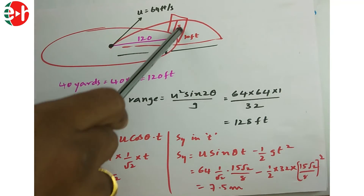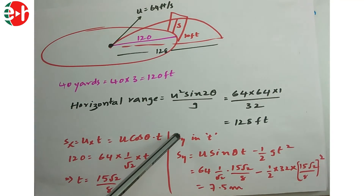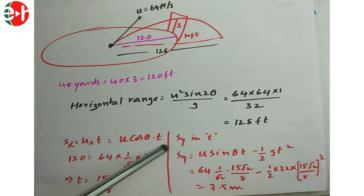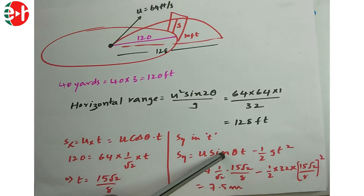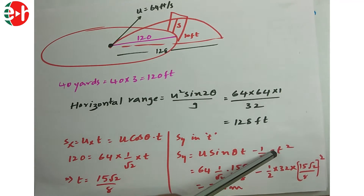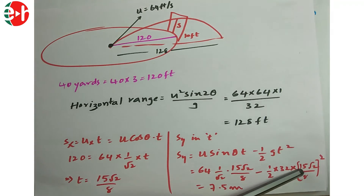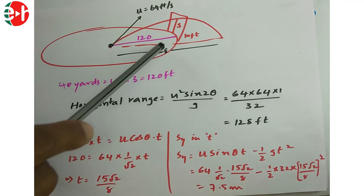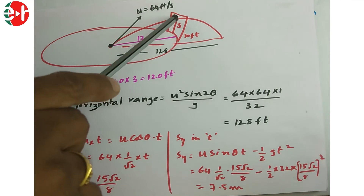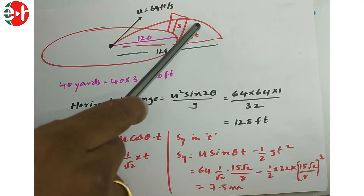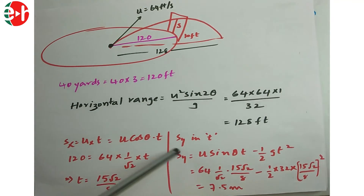Vertical displacement: Sy = u·sinθ·t − ½g·t² = 64×(1/√2)×(15√2/8) − ½×32×(15√2/8)². Upon simplification, Sy = 7.5 feet, which is less than the 10-foot goal post height. Therefore, the ball passes through the goal post, with a vertical displacement of 7.5 feet.